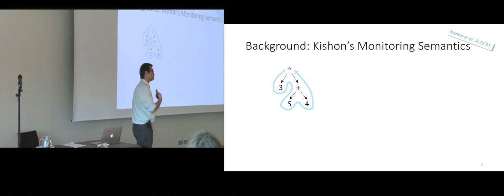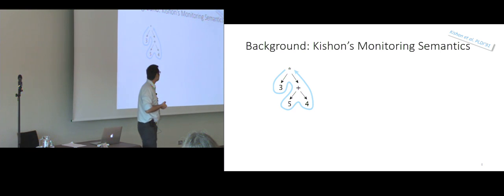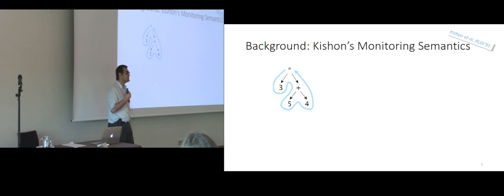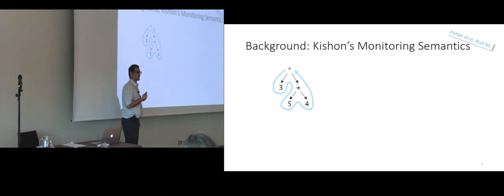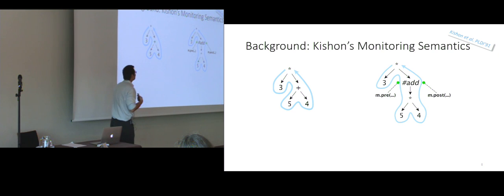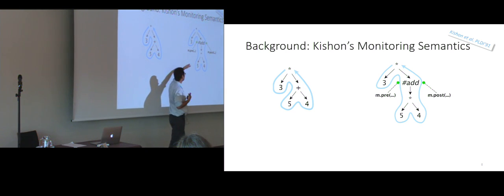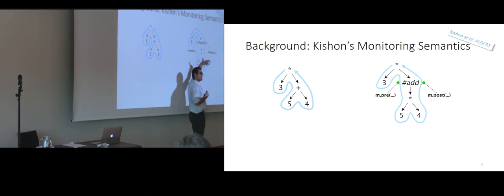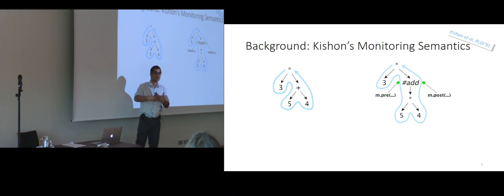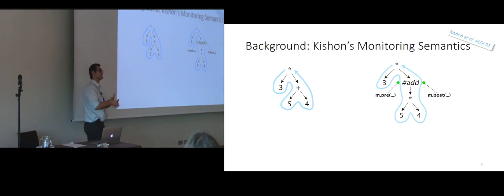There are lots of works in this domain, and we chose to start from Kisson's monitoring semantics, which is a nice paper presented at PLDI in 1991. Basically, the idea is: in order to interpret a language you traverse the abstract syntax tree in a certain order. In the monitoring semantics presented by Kisson, they add two operations — you annotate your AST and you have a pre-processing operation and a post-processing operation.